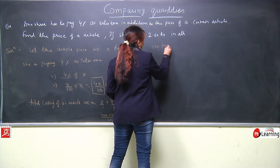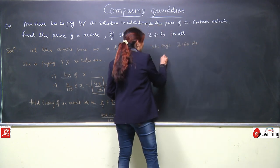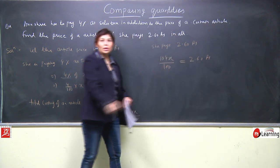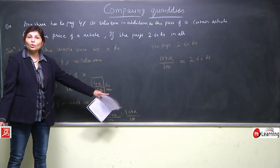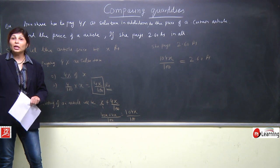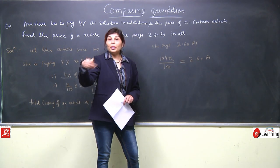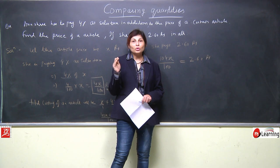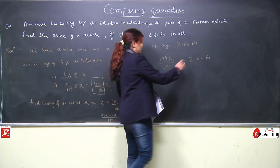She pays for particular item 2.60 rupees, means 104x upon 100 is equal to 2.60 rupees. Why did we equate both? If shopkeeper is selling something for 10 rupees and charging 2 rupees extra, what amount are you giving? 12 rupees. 10 plus 2.